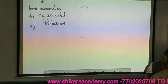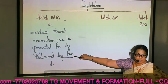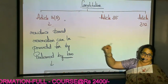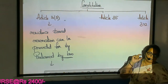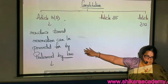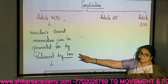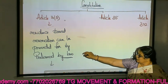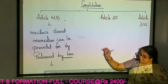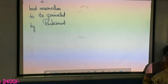The problem is Article 16(3) only says that reservation based on residence will be given by Parliament, but it does not specify whether this applies to the entire state or only a part of the state. Since India provides single citizenship, Parliament has the power. But whether it should be given only to part of the state or to the entire state is not specified.